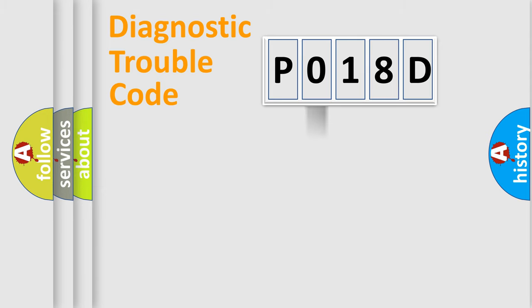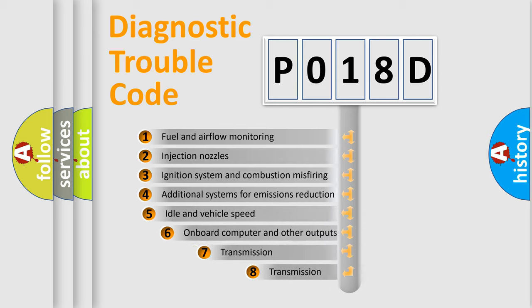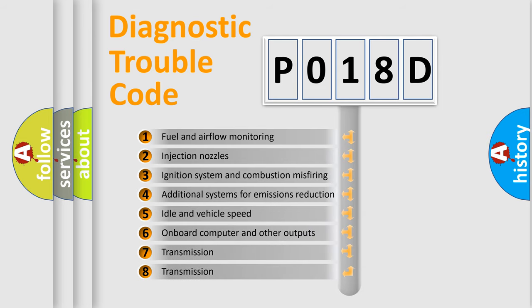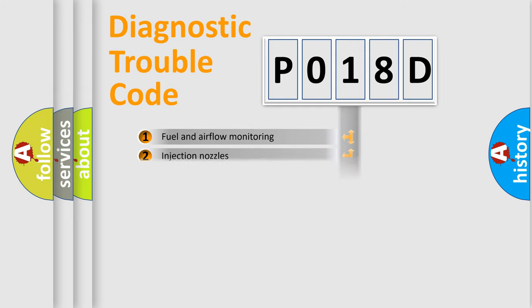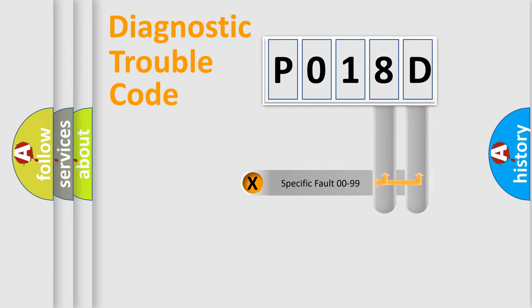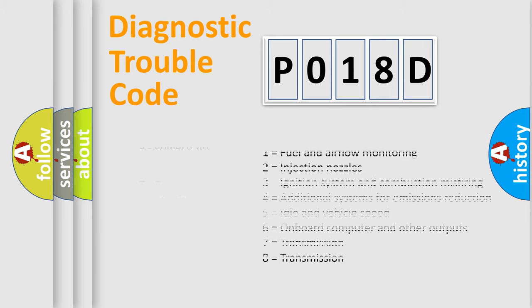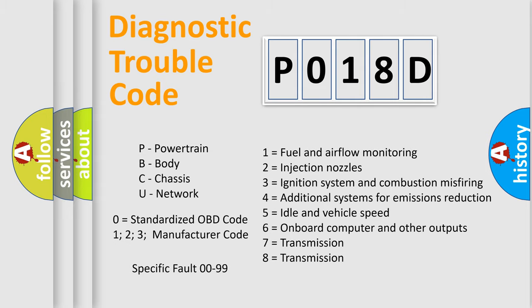The third character specifies a subset of errors. The distribution shown is valid only for the standardized DTC code. Only the last two characters define the specific fault of the group. Let's not forget that such a division is valid only if the second character code is expressed by the number zero.